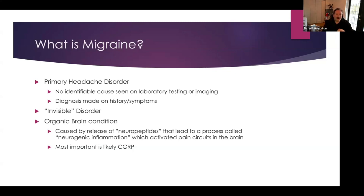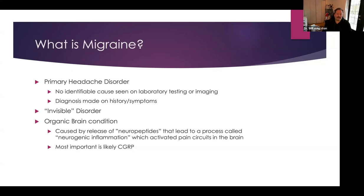What we know about why migraine happens: it's caused by a release of what we would call neuropeptides. There's a bunch of chemicals that can get released in the brain, which then activate pain circuits in the brain. It's a process we've termed neurogenic inflammation. There are a whole lot of specific molecules that we know are important, but the one we've found over the last few decades to be probably the most important is one called CGRP. That becomes important based on some of the treatments I'll discuss later on.